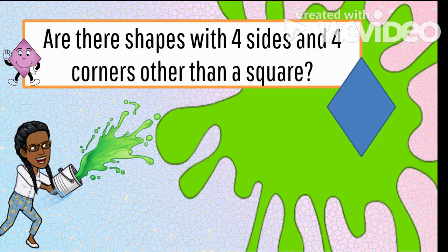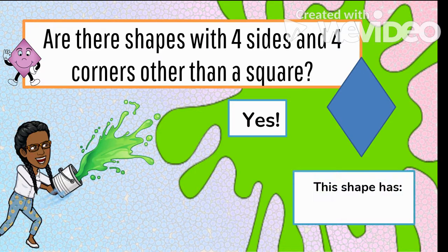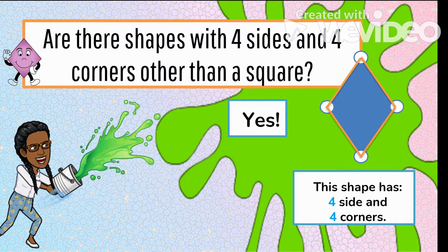Well, there is a shape that is right here. Yes, that is correct. There are shapes with four sides and four corners other than a square. This shape has four sides and four corners.